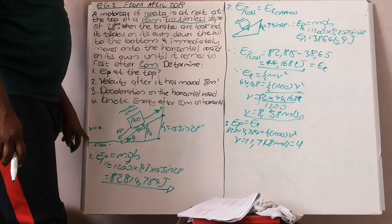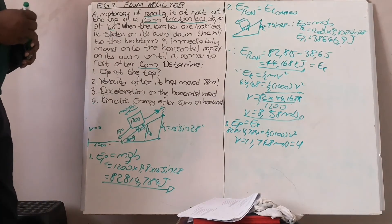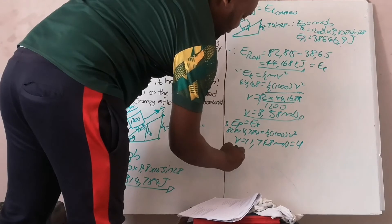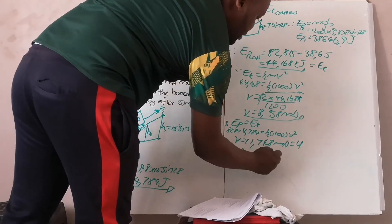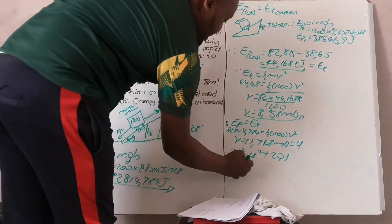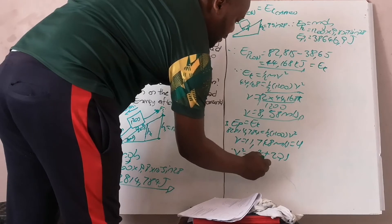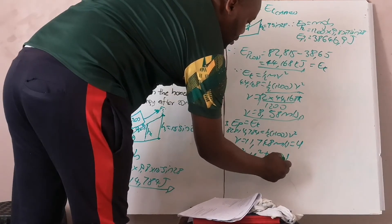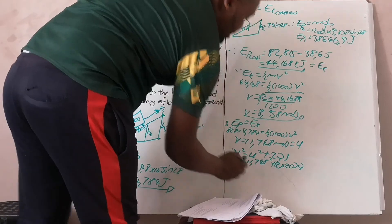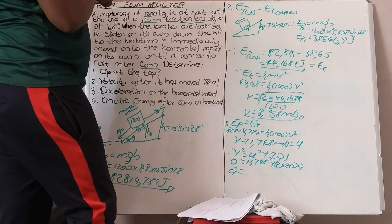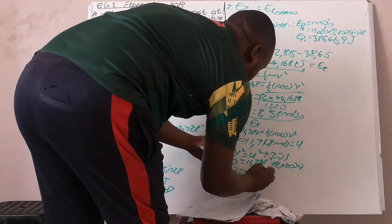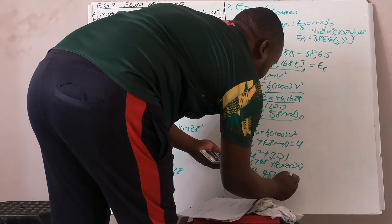You have your initial velocity of 11.748 m/s, your final velocity of 0, and the distance moved of 20 meters. To calculate deceleration on the horizontal surface, use the equation v² = u² + 2as. Final velocity is 0, initial velocity is 11.748 m/s, and distance is 20 m. Solving gives a deceleration of negative 3.451 meters per second squared.